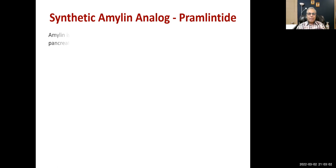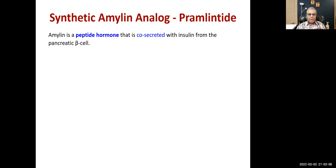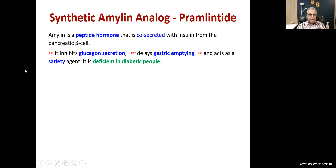Amylin is co-secreted with insulin; it is a peptide hormone secreted from the beta cells, and they have many functions. These are also decreased in both type 1 and type 2 diabetes. As I said, there are basically three problems in type 2 diabetes: one is low insulin secretion, two is peripheral insulin resistance, and three is increased glucagon secretion.